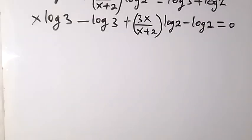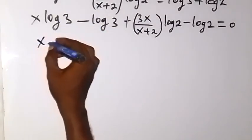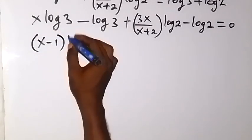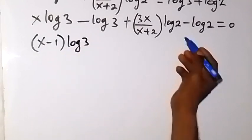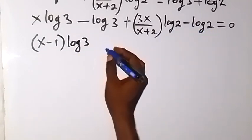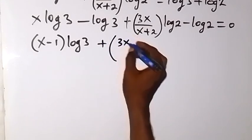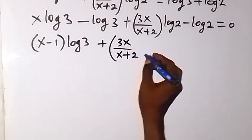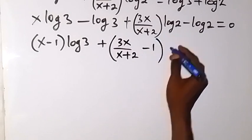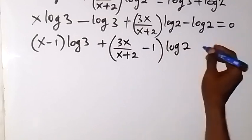From here we can factor log 3 out, because log 3 is common. So we can say this is (x minus 1) log 3. Also, log 2 is common on the other terms, so we factor log 2 out and get plus (3x over x plus 2 minus 1) log 2, equals 0. The expansion of this gives us back what we had.